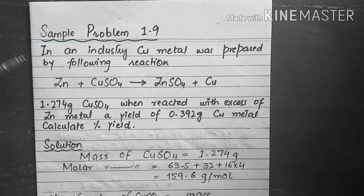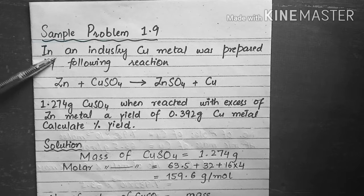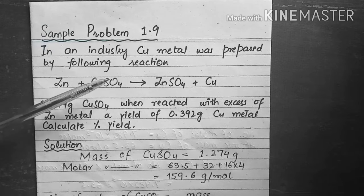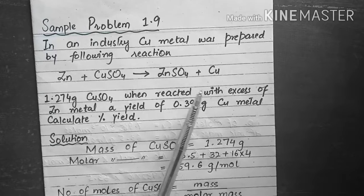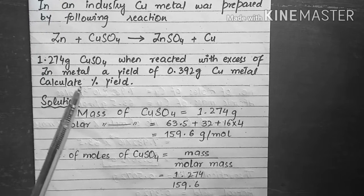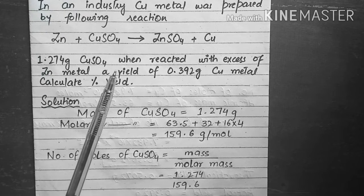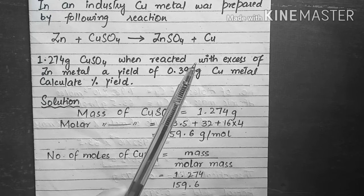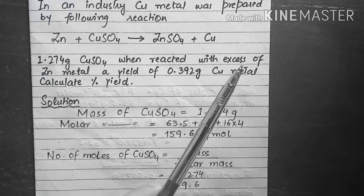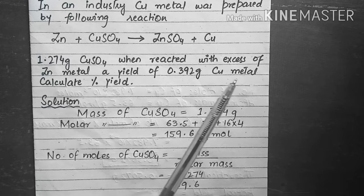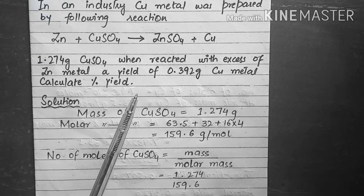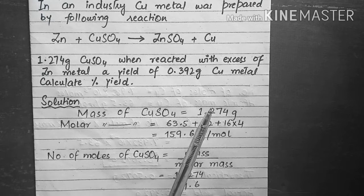Sample problem 1.9 from chapter 1, stoichiometry. In an industry, copper metal was prepared by the following reaction: zinc plus copper sulfate produces zinc sulfate plus copper. If 1.247 grams of copper sulfate, when reacted with excess zinc metal, yielded 0.392 grams of copper metal, calculate the percentage yield.